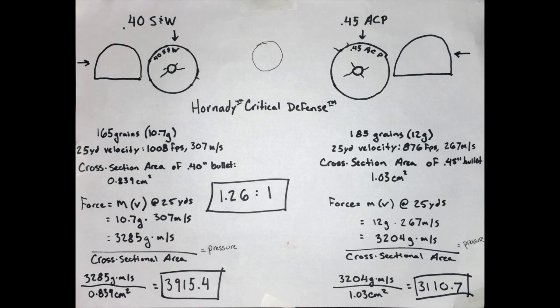In summation, the 40 caliber Smith & Wesson impacts its target with 1.26 times the force of a 45 ACP round.